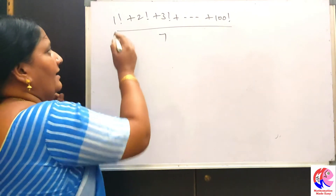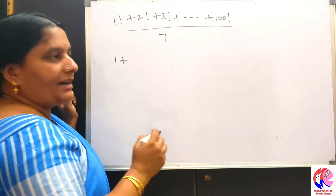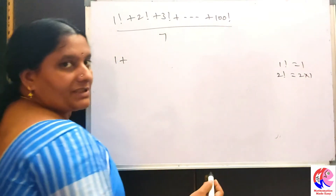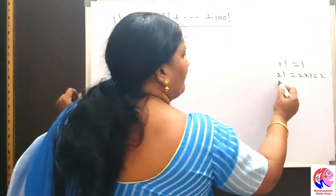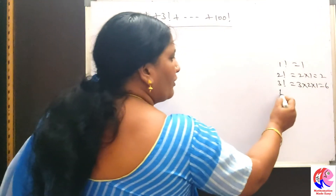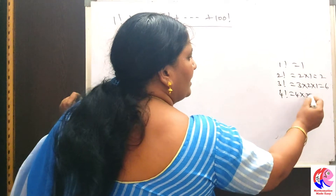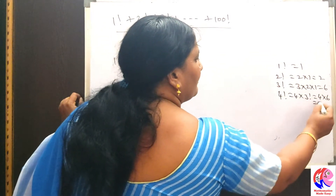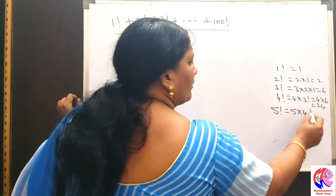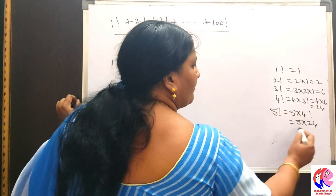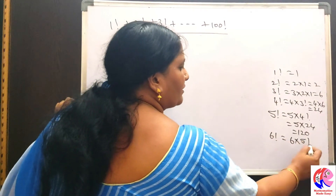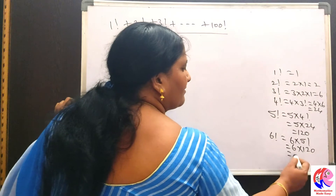Let us write the factorial values: 1 factorial is 1. 2 factorial is 2 into 1, which is equal to 2. 3 factorial is 3 into 2 into 1, equal to 6. 4 factorial is 4 into 6, which is equal to 24. 5 factorial is 5 into 24, equal to 120. 6 factorial is 6 into 120, which is equal to 720.